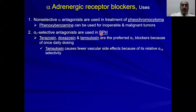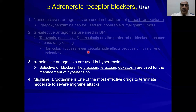Alpha blockers are also used in benign prostatic hypertrophy. Specifically, tamsulosin has alpha-1A selectivity for receptors in the prostate and neck of the bladder, making it helpful in patients with benign prostatic hypertrophy. They are used in hypertension — like prazosin, terazosin, doxazosin, where the suffix '-osin' indicates they are alpha blockers. They are also used in migraine: ergotamine is one of the most effective drugs for moderate to severe migrainous attacks.